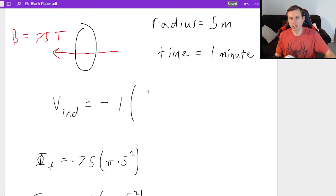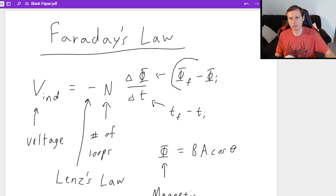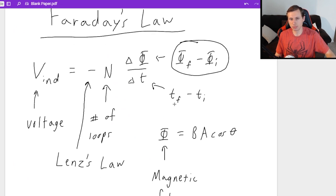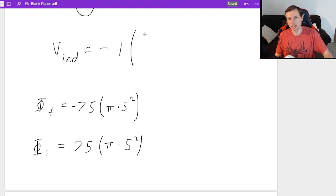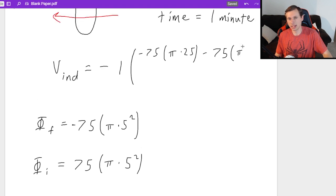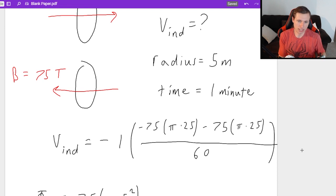So back to our numerator here. Remember that this needs to be the change in flux, flux final minus flux initial in the numerator. So it's going to be flux final negative 75 times pi times 25 because five squared is 25. And then minus flux initial, which is 75 times pi times 25. And the denominator is my time, one minute. I do not want minutes. I want seconds. So that's divided by 60 seconds.